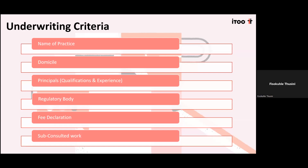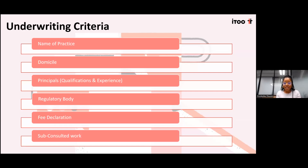We look at how much work is subconsulted, because if they subconsult higher than 50% of their work that changes the risk profile completely since we haven't vetted those consultants. We would want to know who they subconsult to, whether those subconsulted companies carry their own PI, and whether rights of recourse are retained so that if the subcontractor makes a mistake we can enforce rights of recourse against them.